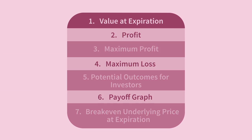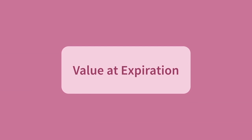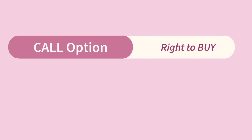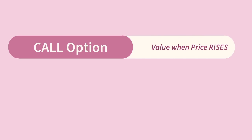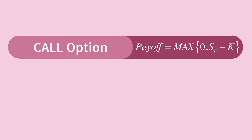First let's talk about value at expiration. A call option is the right to buy an asset in the future — the right to pay a certain predetermined price for an asset. The value of a call option is dependent on the market price of the asset being more than the price we are going to pay given that we hold the option. So the payoff of a call option is zero if the underlying price is less than the strike price.